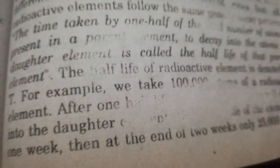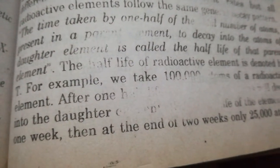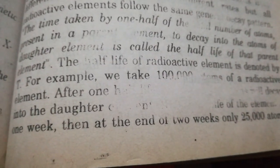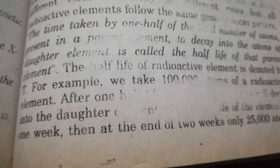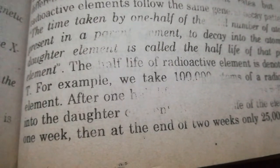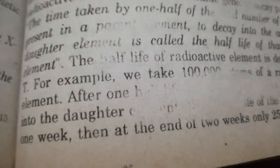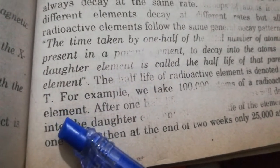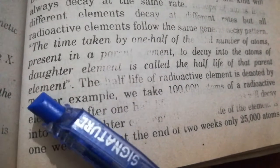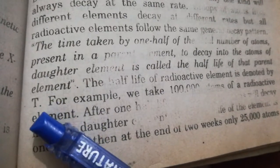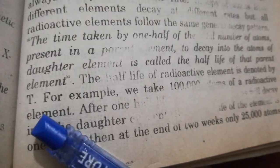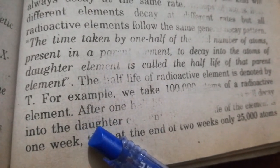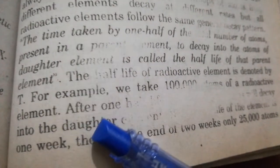Half life — if you look at this example, how do we predict the half life of a radioactive element symbolically? It is represented with the abbreviation T one-half. So this is half life. Now let's look at this example.